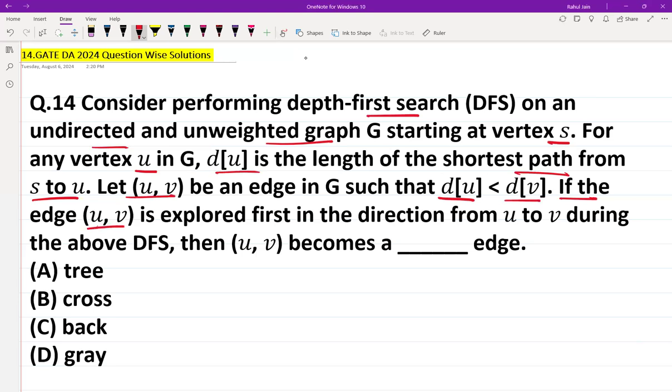If the edge (U, V) is explored first in the direction from U to V during the above DFS, then (U, V) becomes which edge? Tree edge, cross edge, back edge, or gray edge.